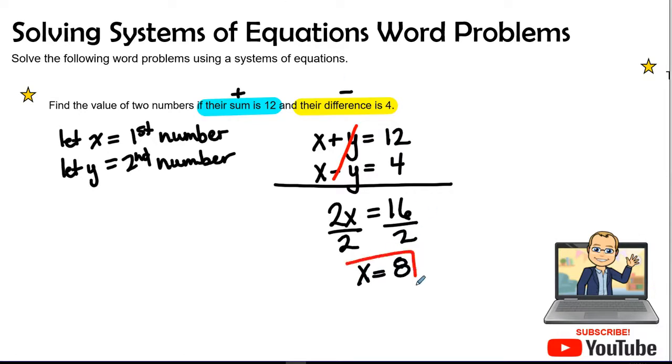Now to find our second number, we're going to go ahead and plug it in. And this time I'm going to plug it in to the second problem. So here we have X minus Y equals four. Wherever I see an X, I'm going to open it up with parentheses. So I can plug in that value of eight.